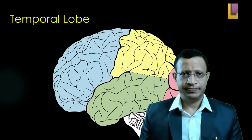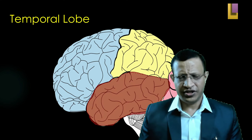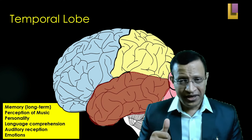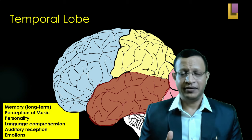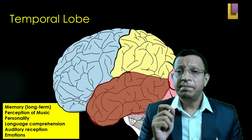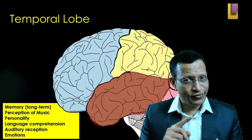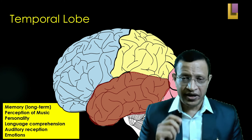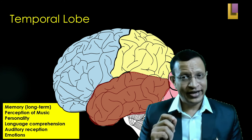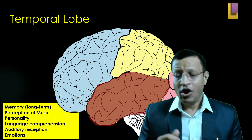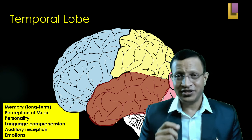Let's move to the second important area: temporal lobe functions. The temporal lobe functions include memory — especially long-term memory — perception and retention of music memory, personality, language comprehension (that is, Wernicke's area), auditory reception, and emotions. These are the important functions of the temporal lobe.